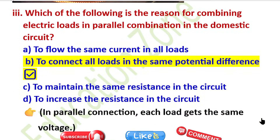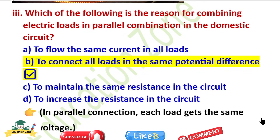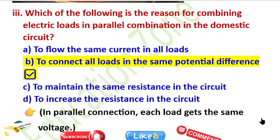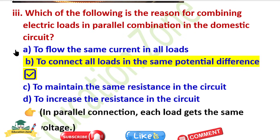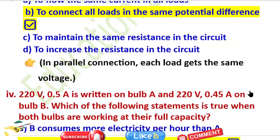Now question number 3: Which of the following is the reason for combining electric loads in parallel combination in the domestic circuit? The right answer is option B — to connect all loads in the same potential difference.